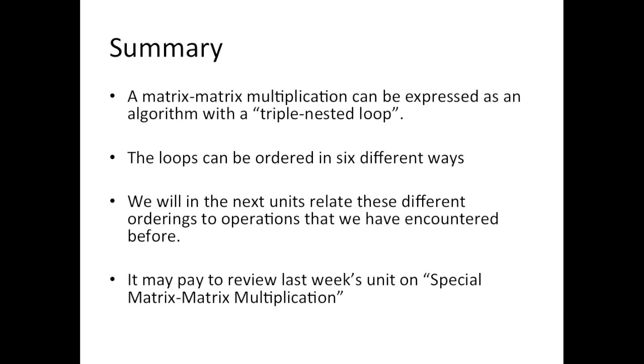To summarize, a matrix-matrix multiplication can be expressed as an algorithm with a triple nested loop. The loops can be ordered in six different ways. We will, in the next units, relate these different orderings to operations that we have encountered before.